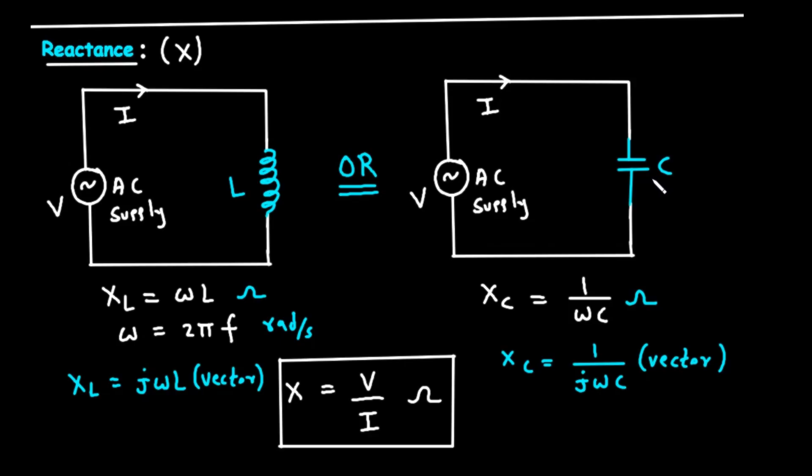A capacitor opposes any change in voltage by storing electrical charge. As the AC voltage rises and falls, the capacitor is constantly charging and discharging, which creates an opposition to the current flow. This opposition is called capacitive reactance, written as X with a subscript C.